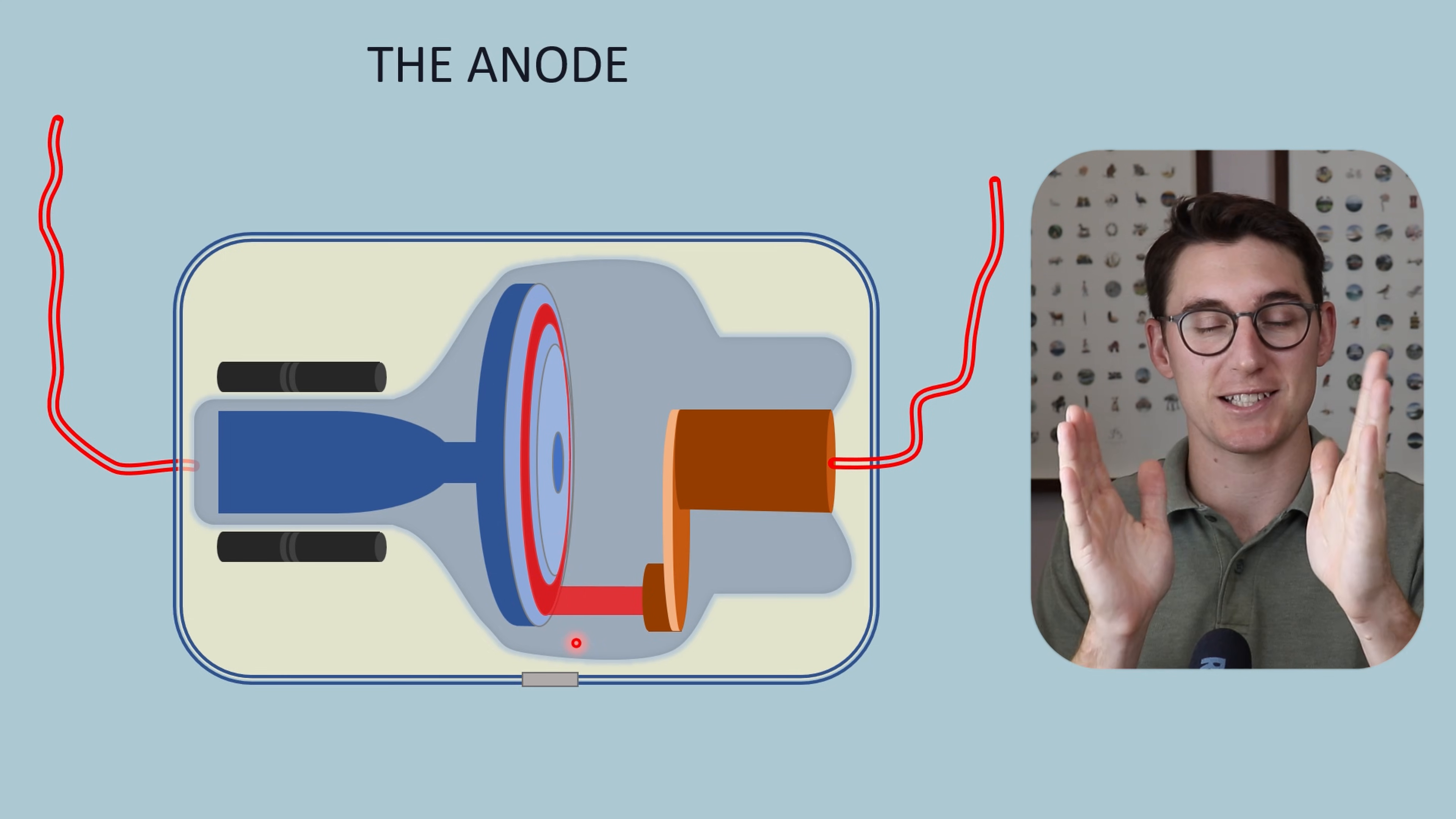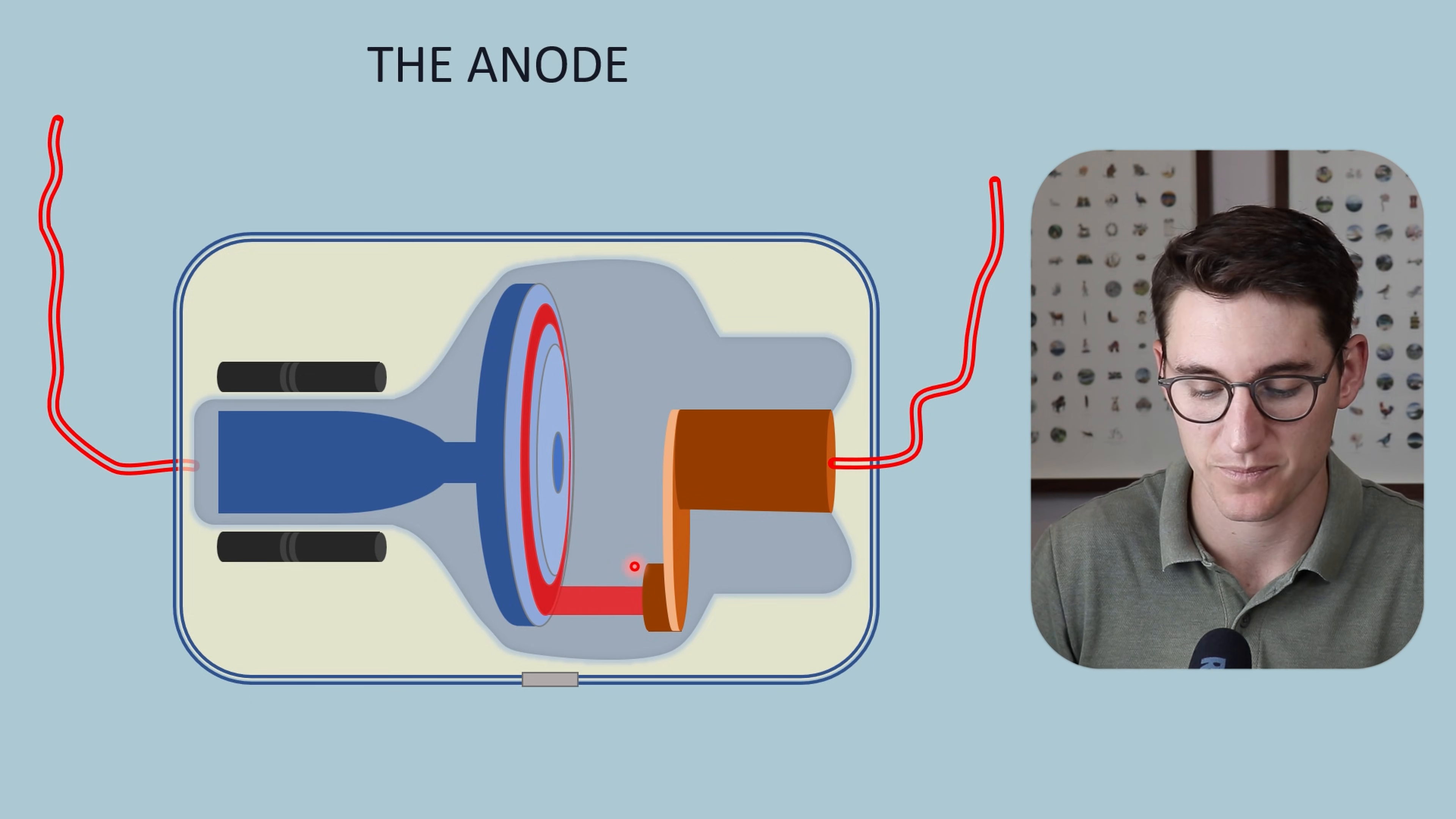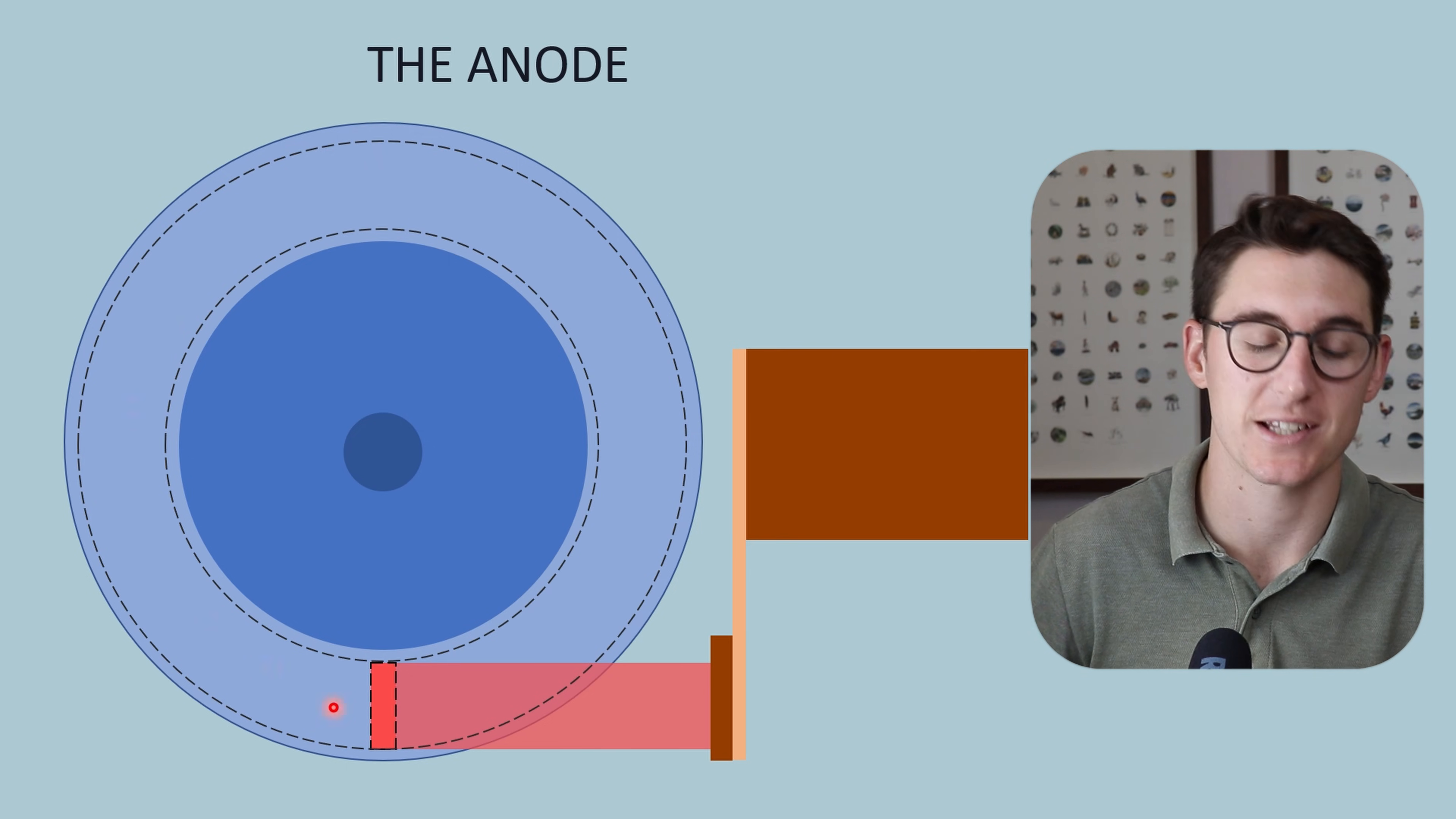We can get a stationary anode that doesn't spin, but we can't get long exposure times because heat builds up on one focal spot. When we rotate the anode we spread that heat over a larger distance. Looking at the anode front on, this dotted area is our focal track. That's one mechanism the anode uses.